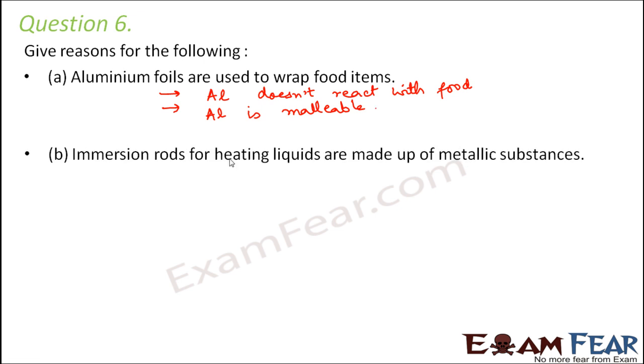Immersion rods for heating liquids are made up of metallic substance. Because what do immersion rods do? They are used for heating water primarily. So it will be able to heat water only when it is able to conduct the heat. Right? Because these metals are good conductors of heat and electricity. So that is why they are used in immersion rods.